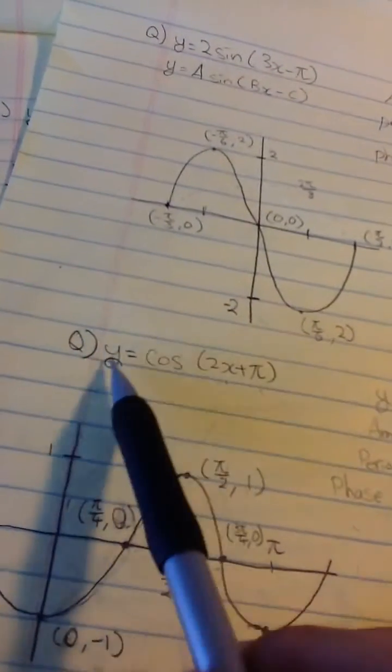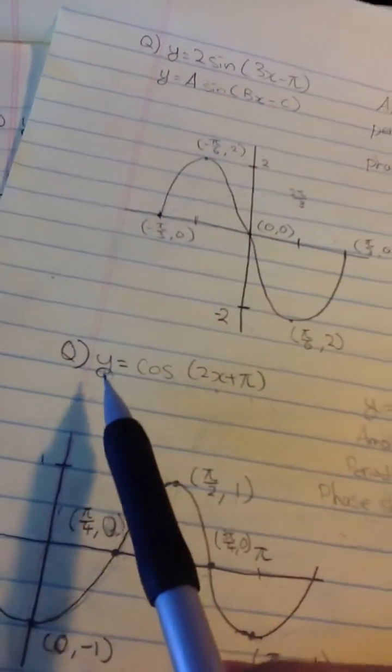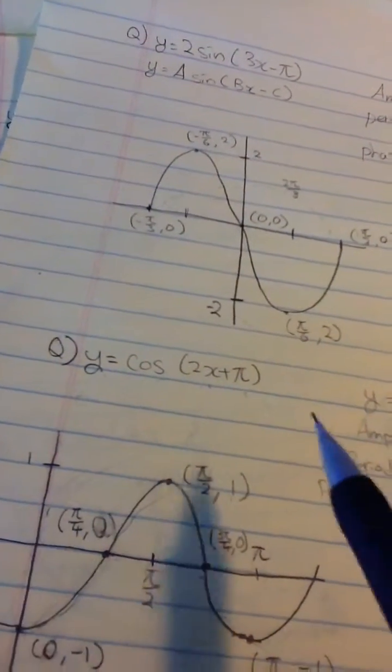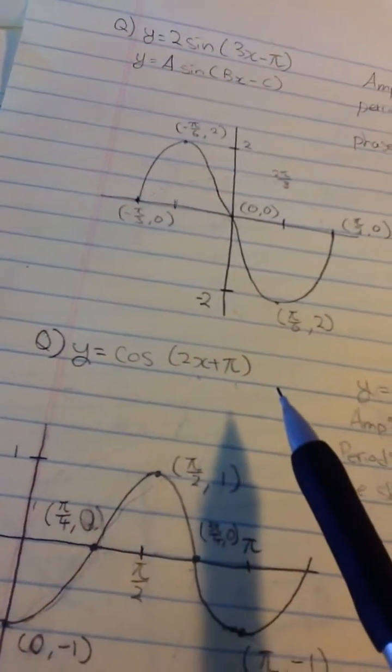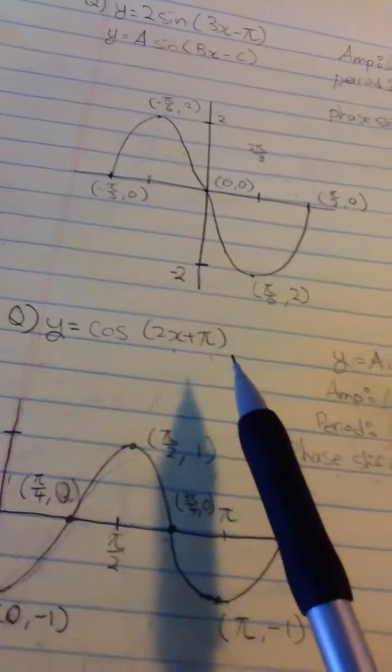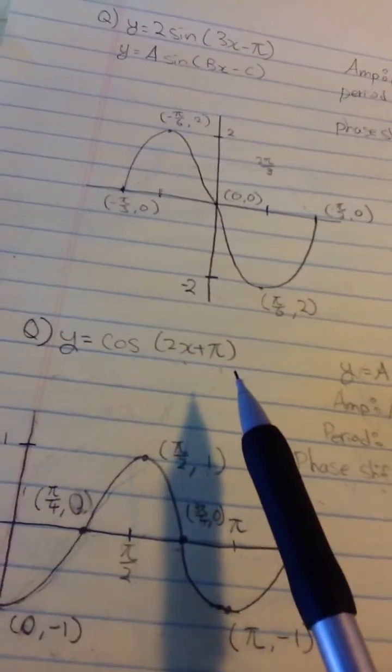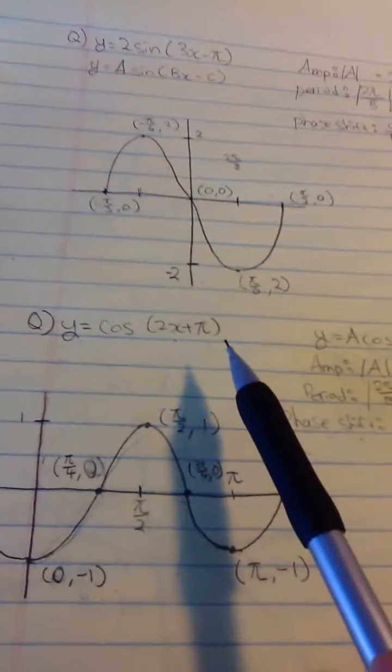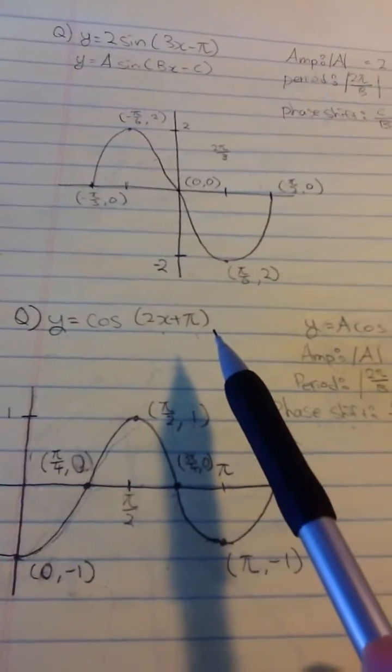Hello, my name is David Hyun and I'm going to solve one kind of trick function for you guys. The question we have today is sketching the function y equals cosine(2x + π). I'm also finding the amplitude, period, phase shift, and the five major points in the graph.